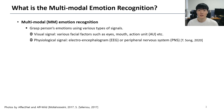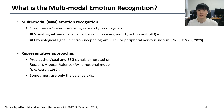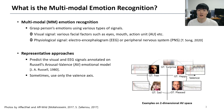Multimodal emotion recognition is to grasp a person's emotions using various types of signals. Visual signals from the facial region and physiological signals of EEG and PNS are mainly used. A representative method is to predict the visual and EEG signals annotated on Russell's emotional model, consisting of a two-dimensional axis of arousal and valence.